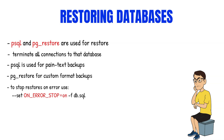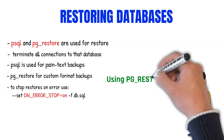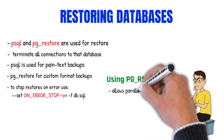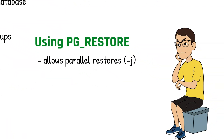Besides the PSQL tool, you can also use the PG restore program. You can use this to restore databases backed up using PG dump or PG dump all. With PG restore you have various options, for example it allows you to perform parallel restores using the minus j parameter, specifying the number of threads or jobs you want to use. Each thread restores separate tables simultaneously, which will speed up your restore process significantly.